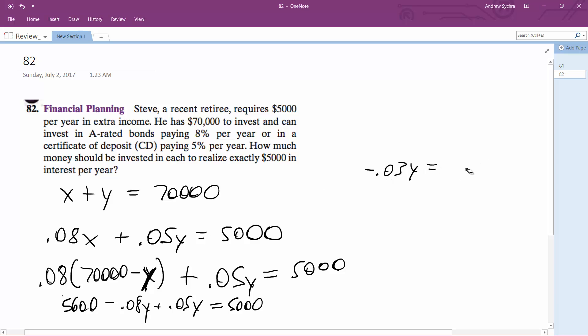This ends up becoming negative 600, divided by negative 0.03.